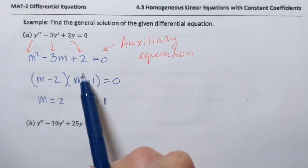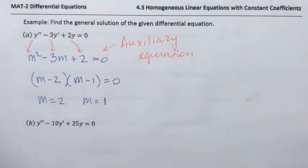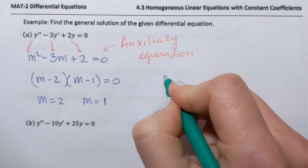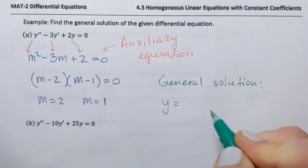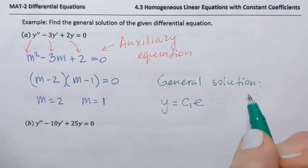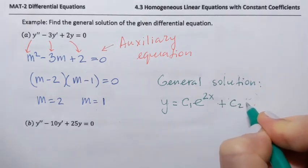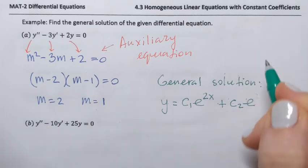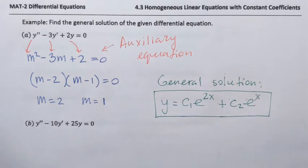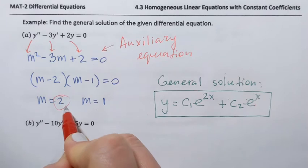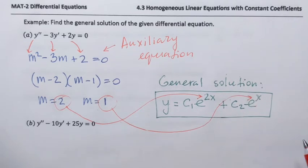So this auxiliary quadratic equation has two distinct real roots — they're real numbers and they're different. In this case, the general solution to our differential equation will have the following form: y equals c1 e to the power of the first root times x, which is just x, plus c2 e to the power of 2x. See how quick and easy it is when you use the auxiliary equation. That root is placed in the exponent, and that's why the coefficient 1 is invisible.